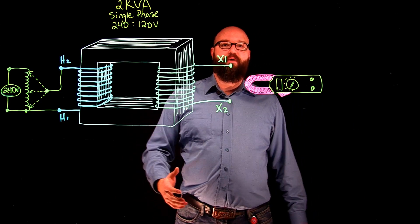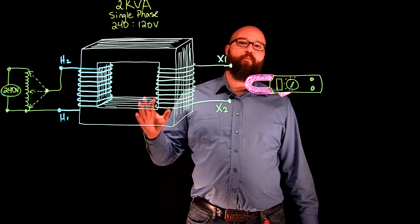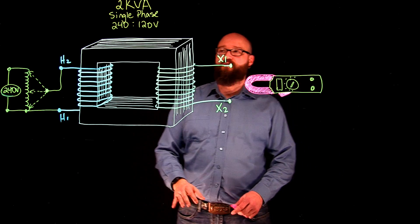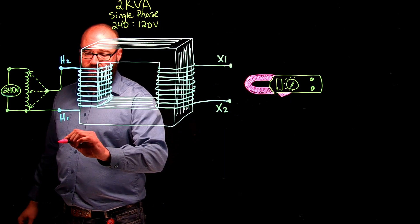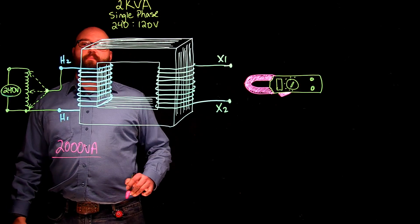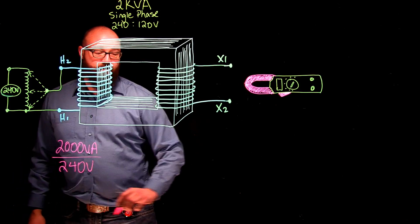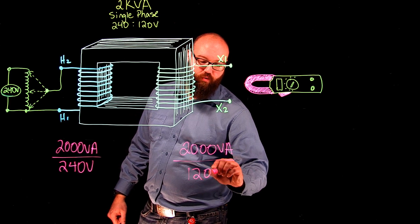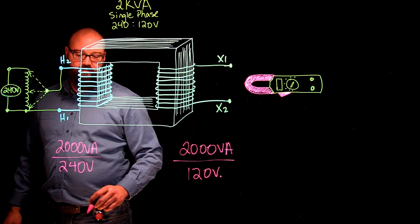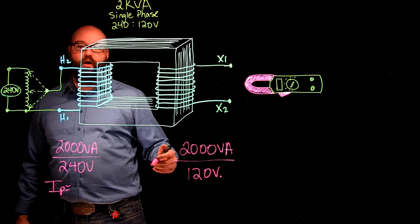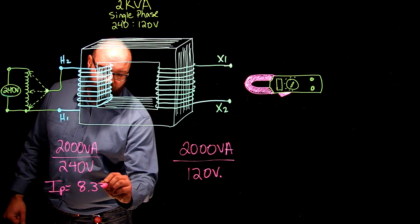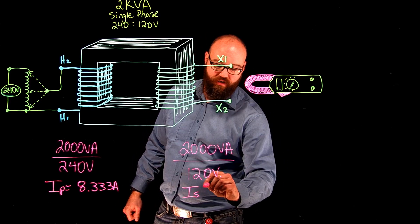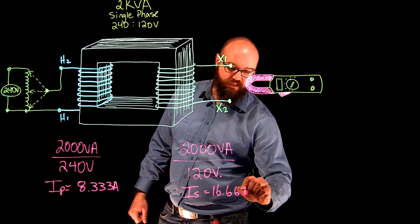The first thing we need to do is determine, based on the information of our transformer, what is our primary rated current and what is our rated secondary current, because what we want to do is get rated secondary current to flow. We have a 2 kVA transformer with a primary voltage of 240 volts and a secondary voltage of 120 volts. Running the numbers: 2,000 divided by 240 gives a rated primary current of 8.333 amps, and the same calculation on the secondary gives a rated secondary current of 16.667 amps.